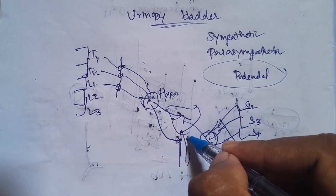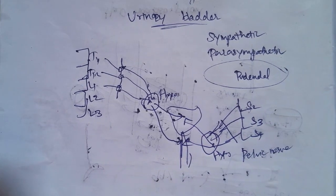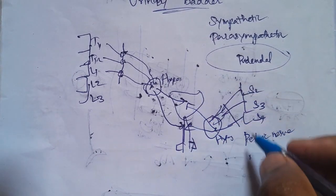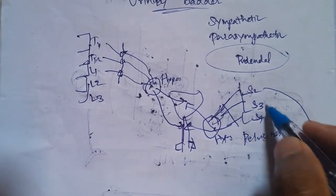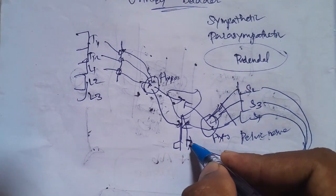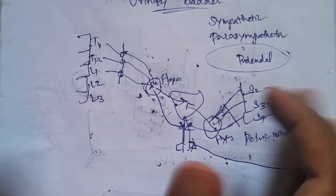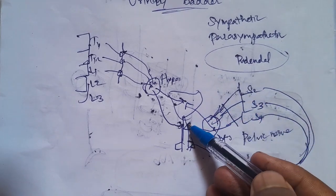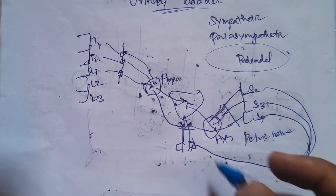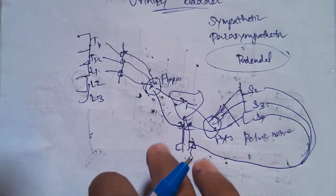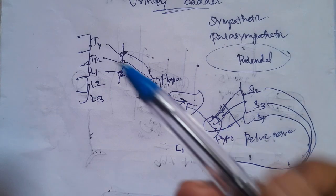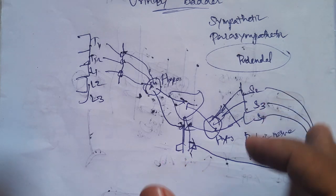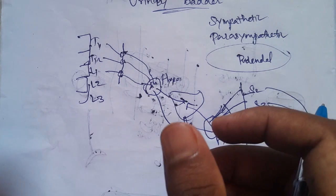The urinary bladder and internal sphincter are supplied by three nerves. These three nerves are: the Sympathetic Nerve, which is the nerve of filling; the Parasympathetic Fiber, which is the nerve of emptying; and the Pudendal Nerve, which provides voluntary control.